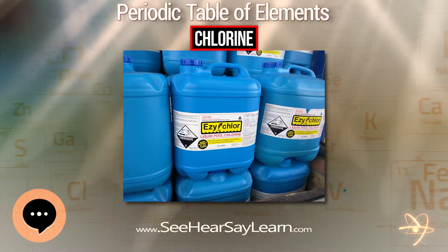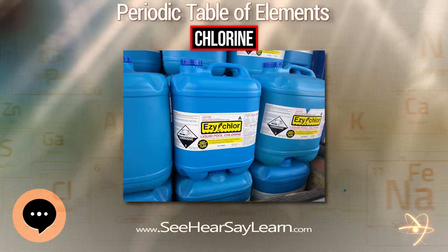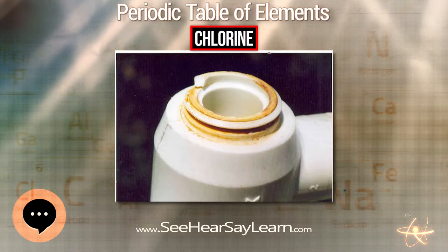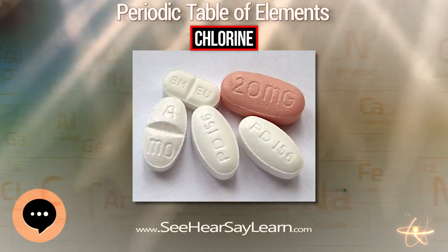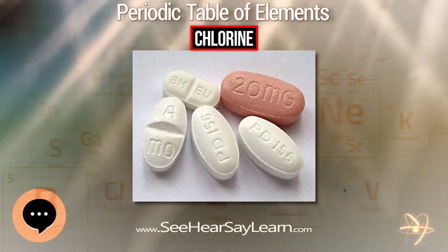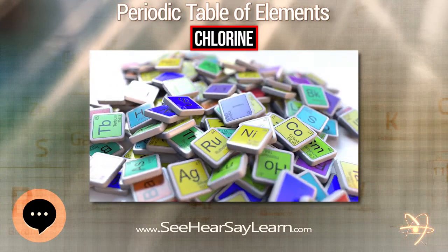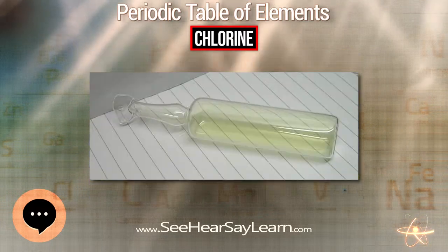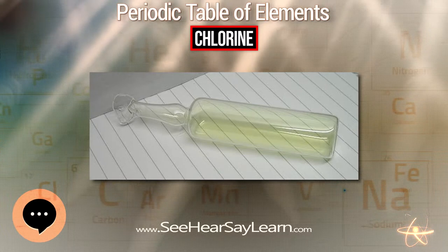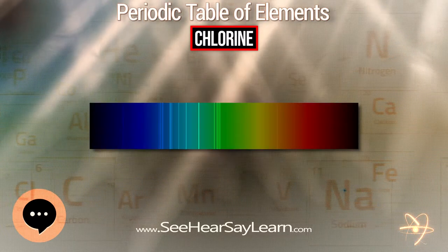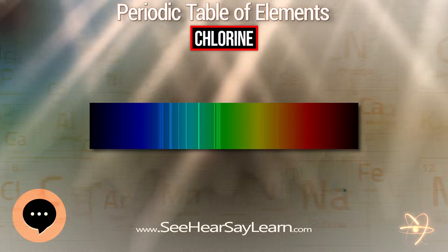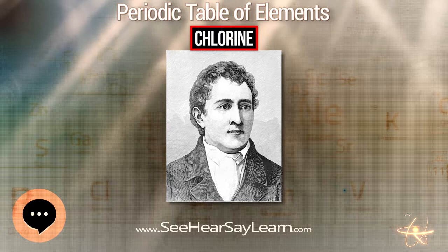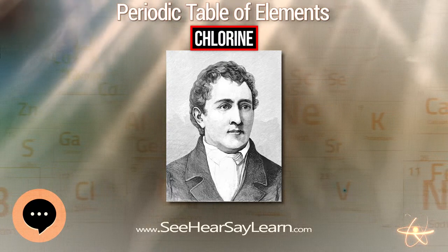Davy named it from the ancient Greek word chloros, meaning pale green, based on its color. Because of its great reactivity, all chlorine in the earth's crust is in the form of ionic chloride compounds, which includes table salt. It is the second most abundant halogen and 21st most abundant chemical element in Earth's crust. These crustal deposits are dwarfed by the huge reserves of chloride in seawater. Elemental chlorine is commercially produced from brine by electrolysis.